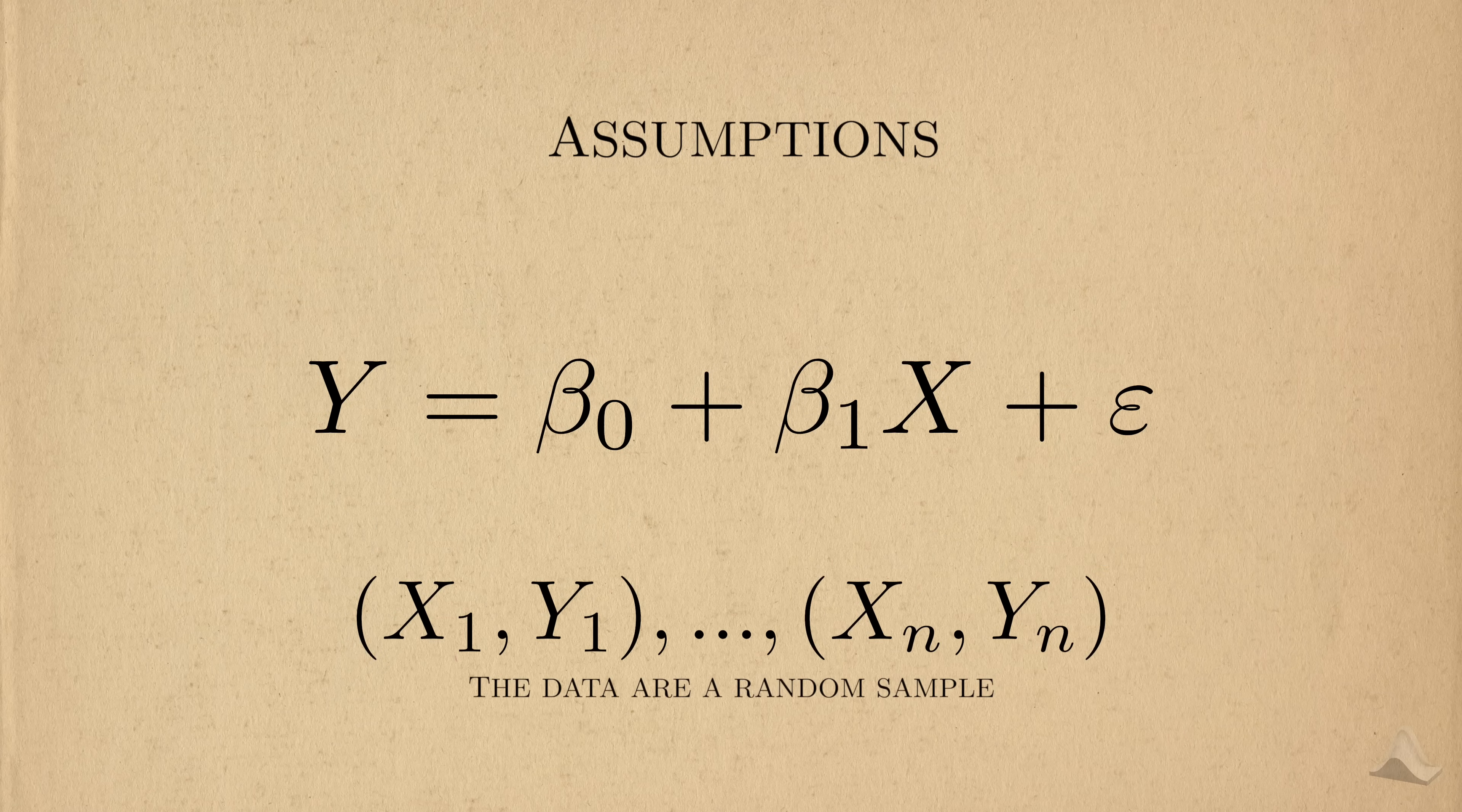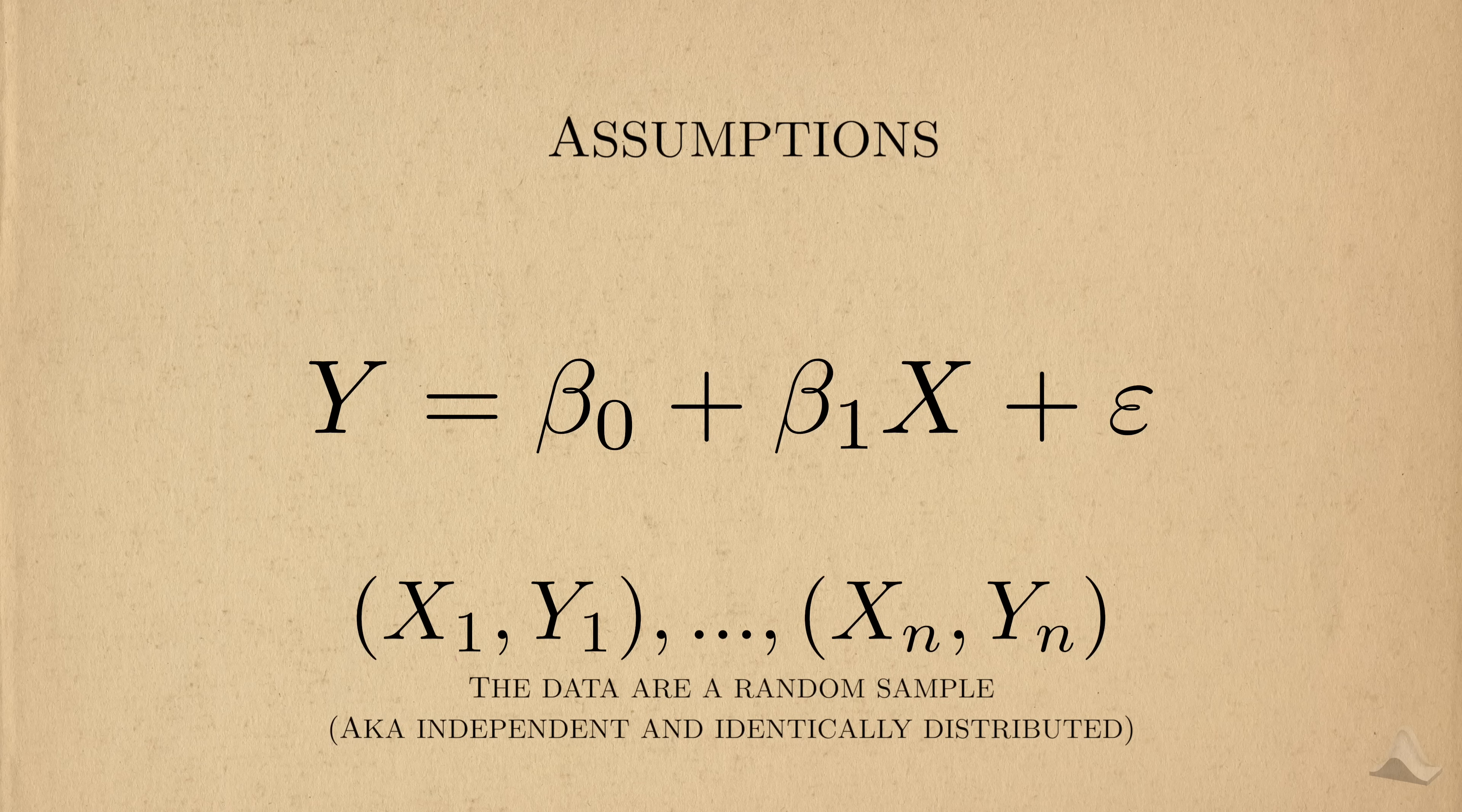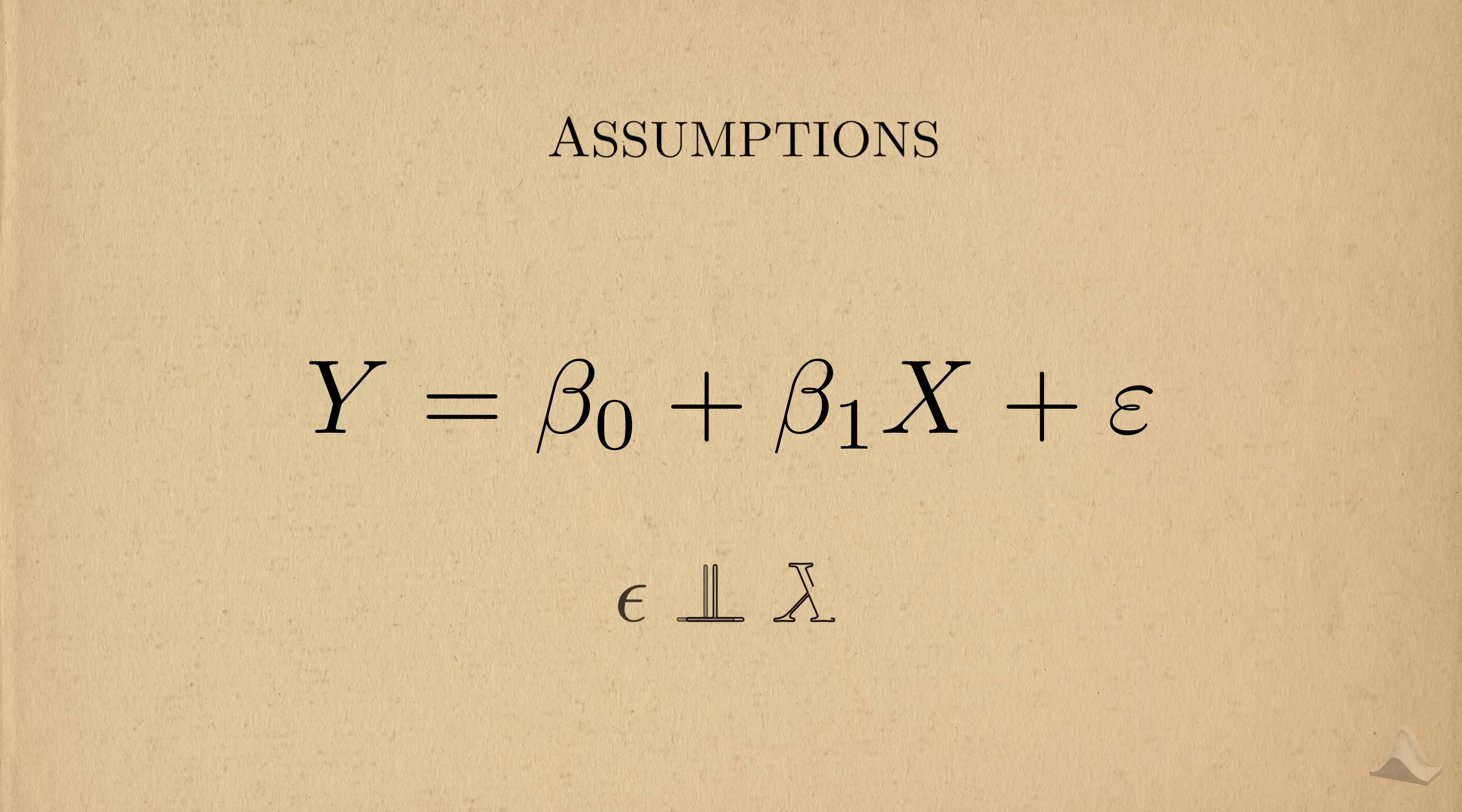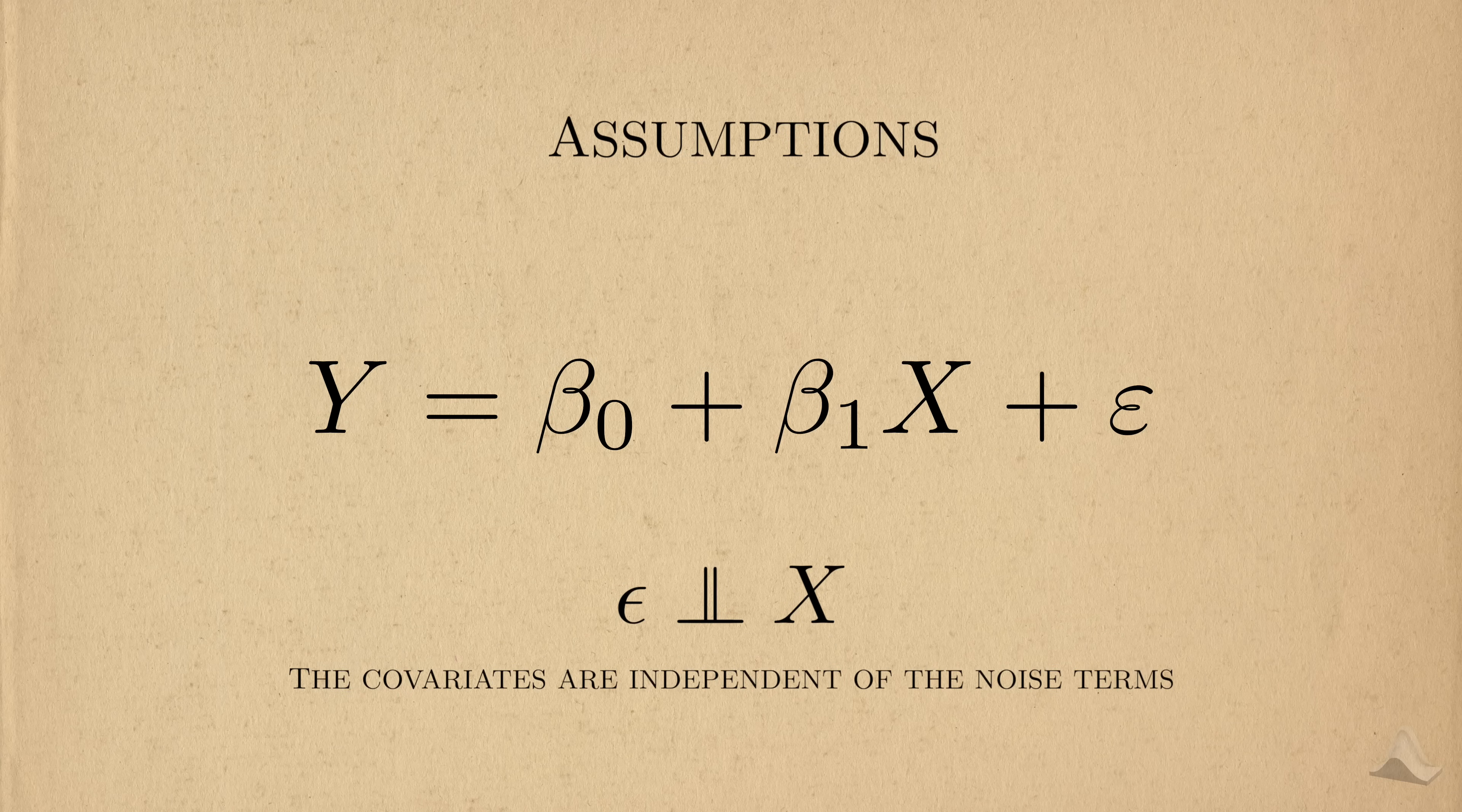Another standard assumption is that the data we collect are from a random sample. That is, they're independent and identically distributed. This has been a standard assumption among the hypothesis tests we've learned, and it simply means that our observations should not influence each other. We also assume that the covariates are independent from the noise terms.